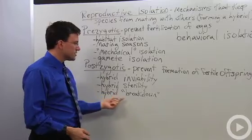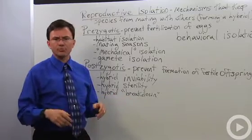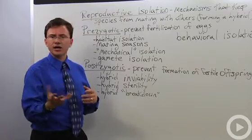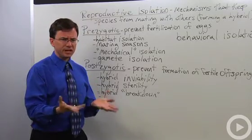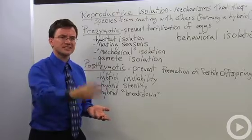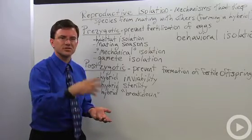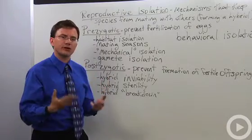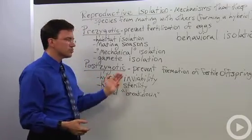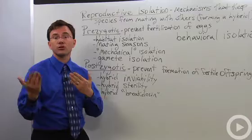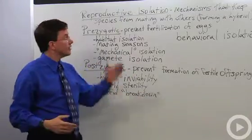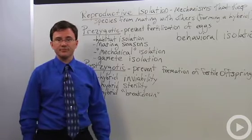A last one that's a little bit unusual is this concept called hybrid breakdown. And that's where the first generation of the hybrid, maybe it can survive, maybe it can compete, maybe it can even have some offspring. But the next generation after that, the children of the children and the grandchildren and so on, they start having greater and greater problems. And typically these sorts of things are due to mismatches in the chromosomes of the two separate species parents. And there you go. Those are the reproductive isolating mechanisms.